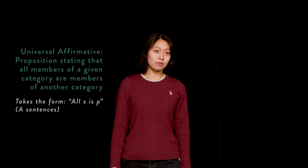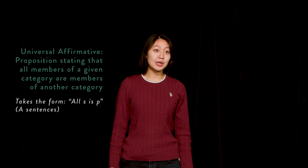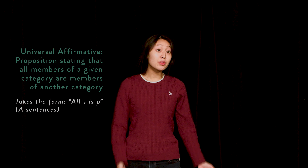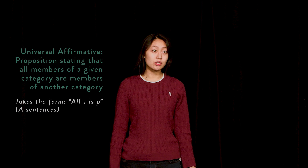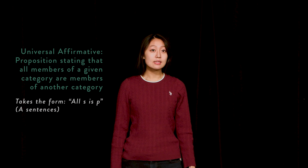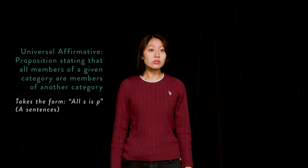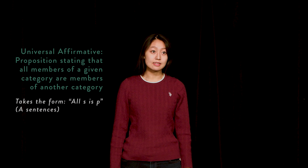The Universal Affirmative and Universal Negative are two of the four types of categorical propositions. They are defined as follows. Universal Affirmative: a proposition stating that all members of a given category belong to another category. These propositions are of the form 'all S is P,' where S is the subject and P the predicate. These are also sometimes referred to as A sentences.